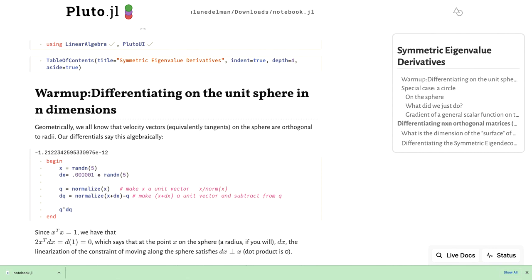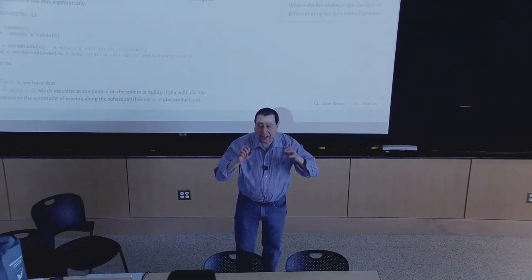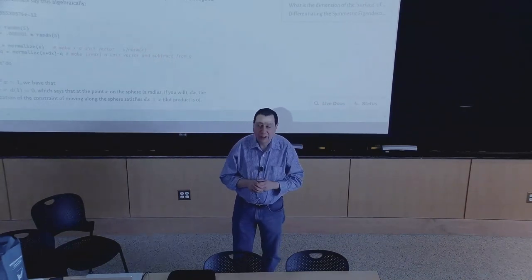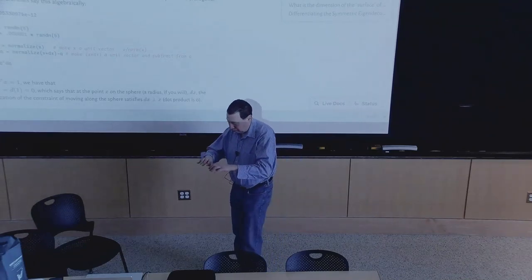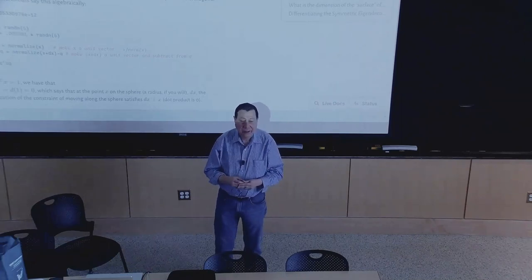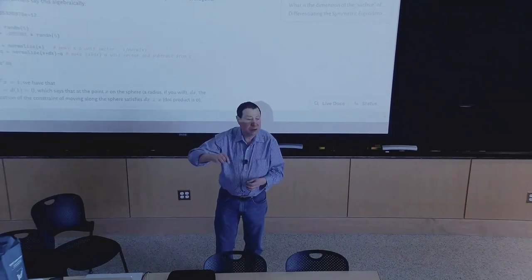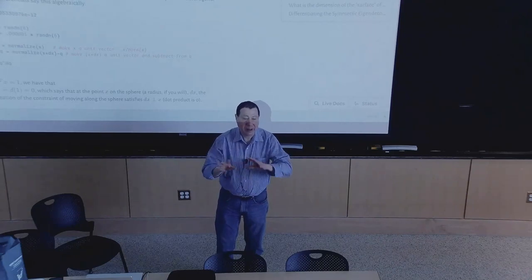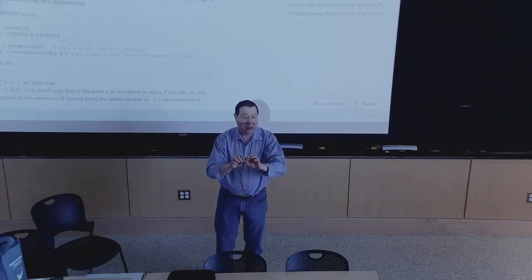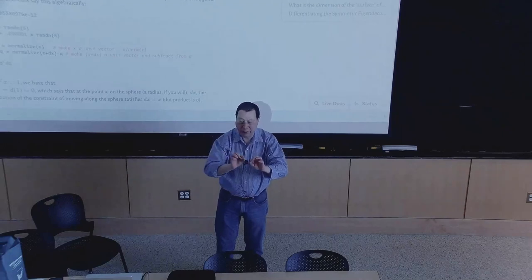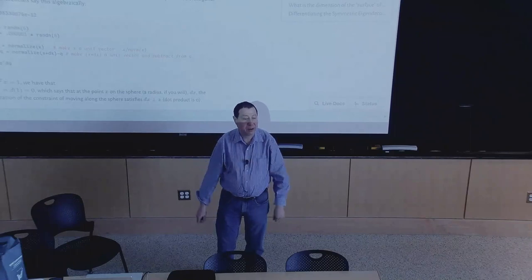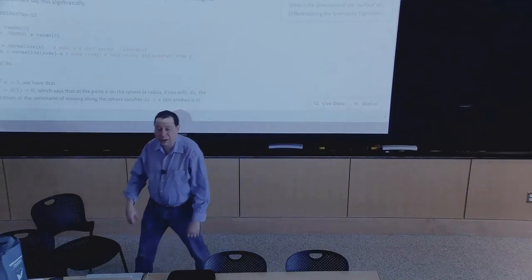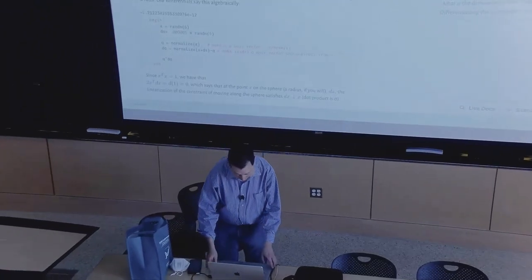Up until now, derivatives were free to be in any direction. All of our little dx's have always been free to be in any direction you like. But if your point is restricted to a surface like the sphere, then your dx is restricted to being tangent to the sphere — it's not in any direction anymore. We're not interested in radial directions; we're only interested in tangent directions because they describe movements on the constrained surface. So we need to figure out how to accommodate these tangential directions.